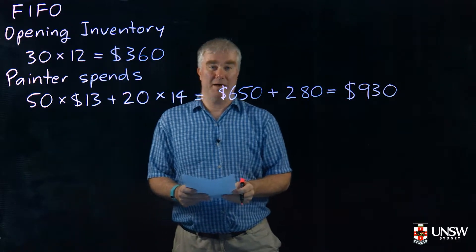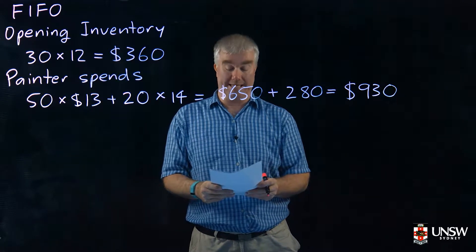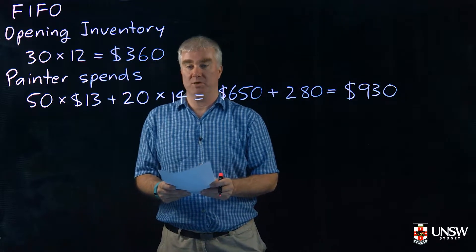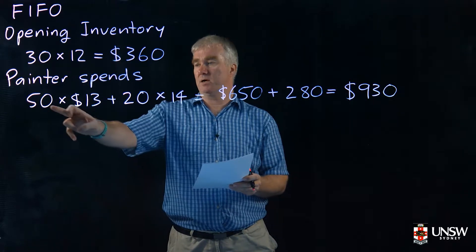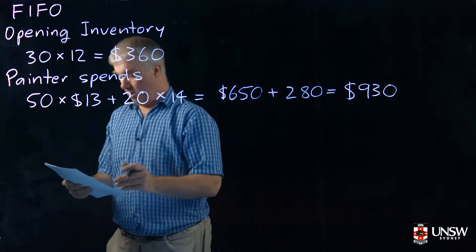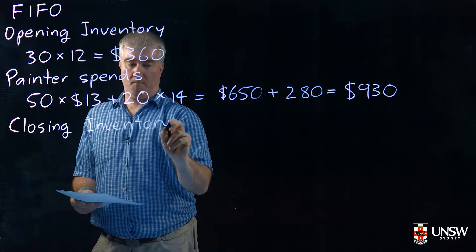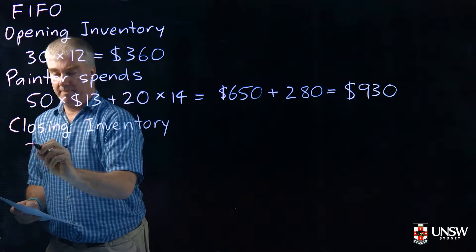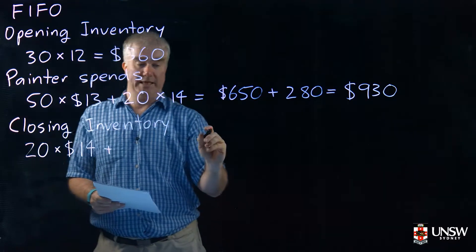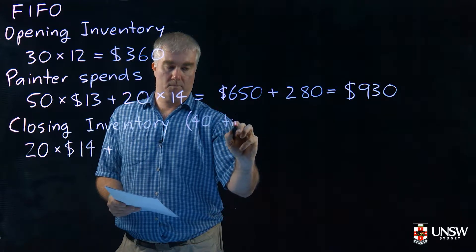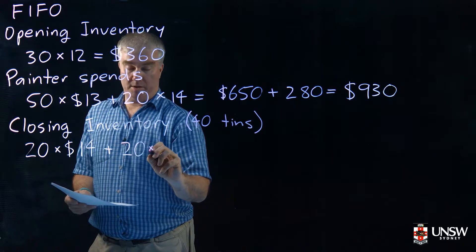At the end of the period he has 40 tins. Using FIFO, those tins are the newest tins — the most recent ones purchased. So 20 of them will be the $14 tins, and there must be another 20 tins from the previous purchase group. So the closing inventory is going to be these 20 tins plus 20 of the next oldest tins, which are the $13 tins.